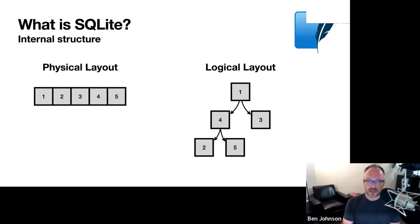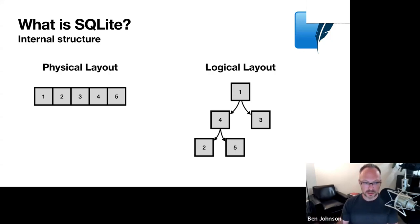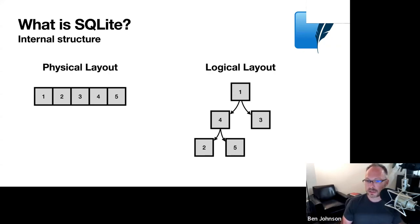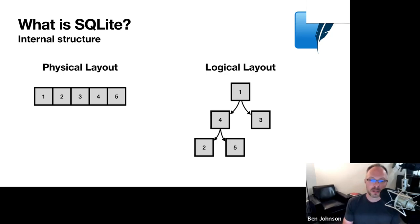Before we get to the actual LiteStream part, it's good to understand how SQLite is structured internally — it has a really simple layout. The physical layout is just a file on disk, separated into fixed-size pages — default is 4 kilobytes, adjustable from 512 bytes to 64 kilobytes. Pages are added sequentially, but logically they're structured as a B+ tree, where all the actual data is stored in the leaf nodes. This layout works great for read-optimized data. Something like an LSM tree, as in LevelDB, would be more write-optimized.